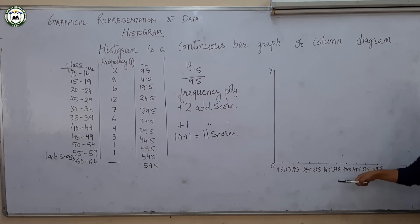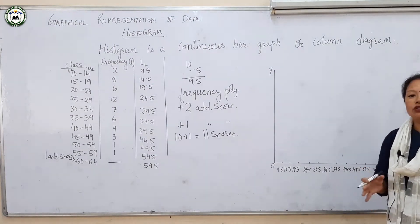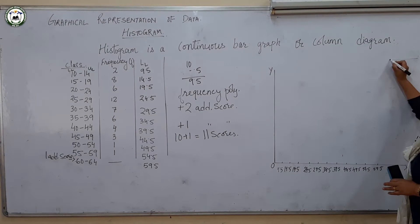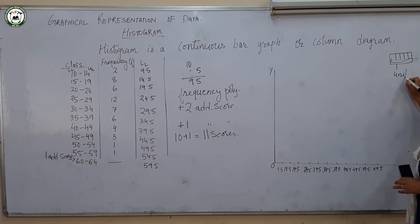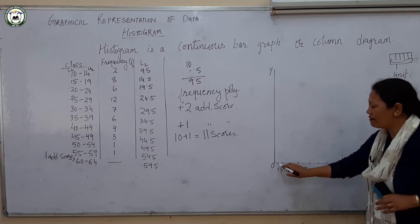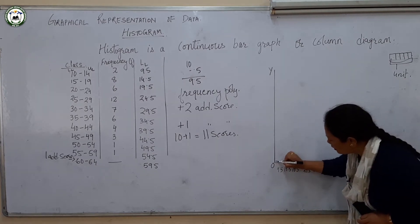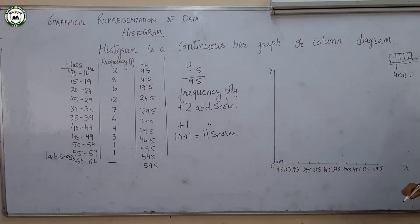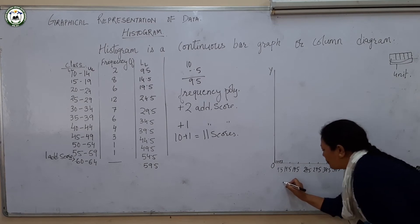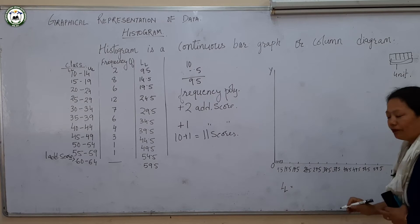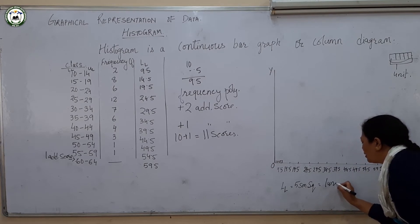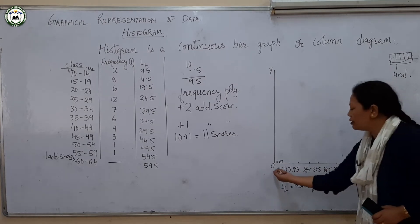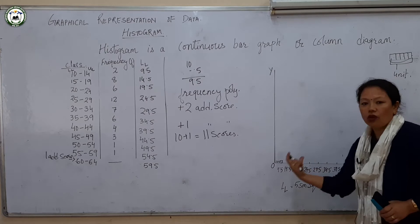Now what you have to do — just like in the frequency polygon, you have taken 5 small squares equal to 1 unit. That means in a graph paper there are 5 small squares, and these will form 1 unit. In the similar way here also, you will take 5 small squares equal to 1 unit. Write down at the base: lower limit equals 5 small squares equals 1 unit of the class interval, so from 0 to 9.5 is your 1 unit.